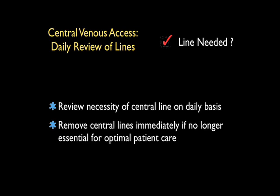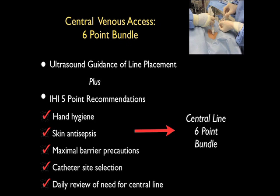In conclusion, the central venous access six-point bundle can potentially decrease the complication rate for patients undergoing this procedure. The six-point bundle is formed by adding ultrasound guidance to the IHI five-point recommendations: hand hygiene, skin antisepsis, maximal barrier precautions, catheter site selection — favoring high lines over low lines — and daily review of the need for a central line.